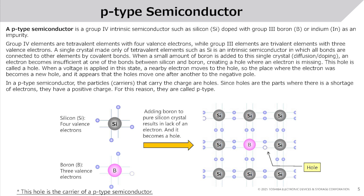When a voltage is applied, a nearby electron moves to the hole, so the place where the electron was becomes a new hole, and it appears that the holes move one after another toward the negative pole. In a p-type semiconductor, the carriers that carry the charge are holes. Since holes represent a shortage of electrons, they have a positive charge — which is why they are called p-type.